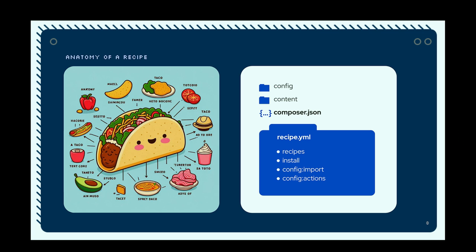What goes into a recipe? The most important element is the recipe.yaml file, which specifies what other recipes should be applied, any contrib modules or themes to install, configuration from those projects to import, and config actions to modify the site's configuration. Next most important is the composer.json file, which defines all the different dependencies. Optionally, you can have folders for configuration and content — sets of static configuration or content files that will get imported as well.